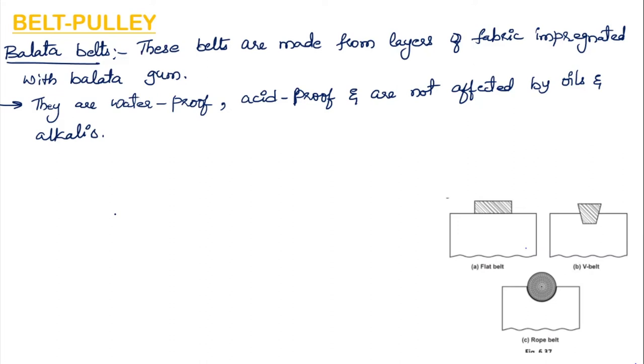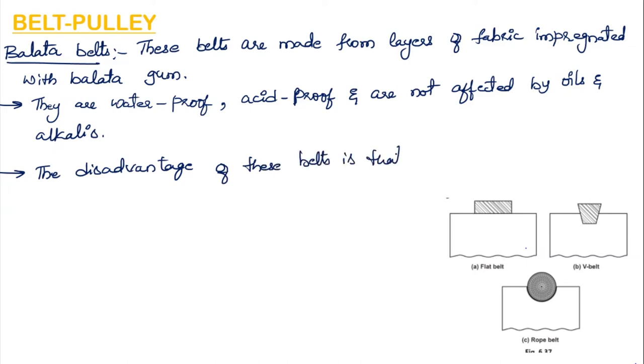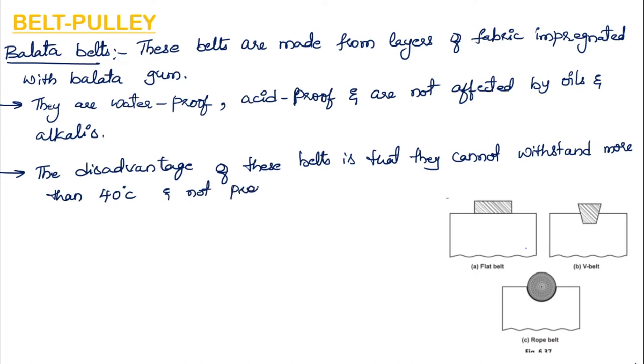The only drawback of balata belts is that they cannot withstand temperatures more than 40 degrees Celsius, and that is why they are not preferred in dry hot conditions. Based on cross section, belts are classified as flat belts, which can be seen in figure 1.